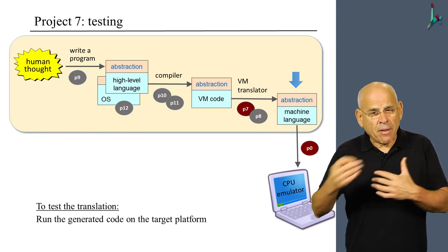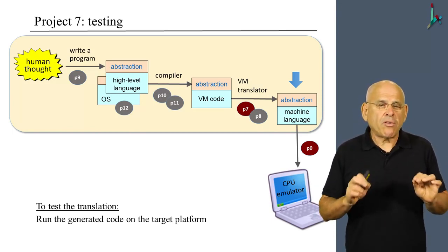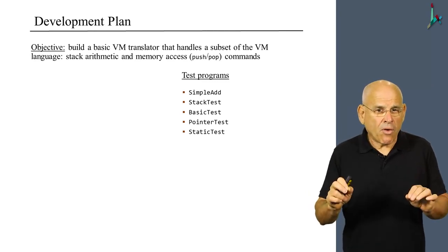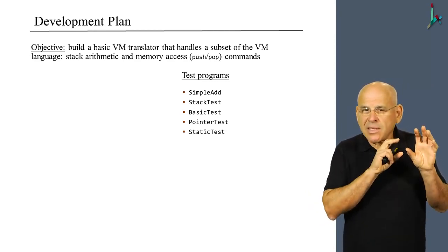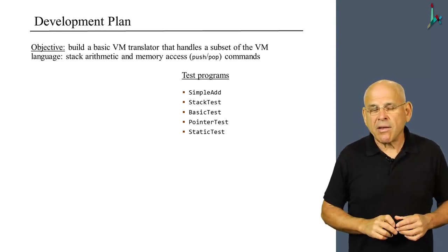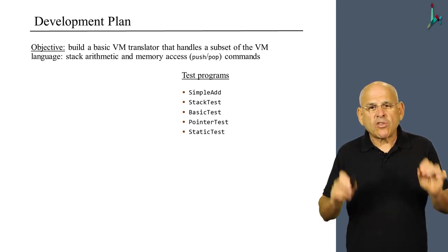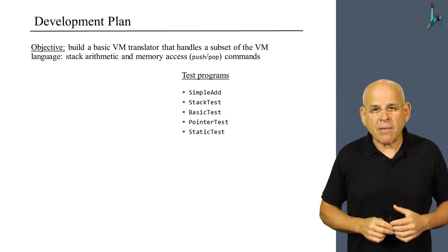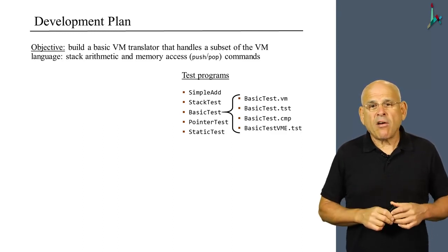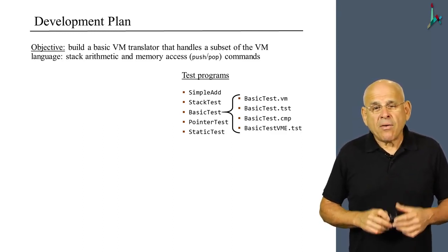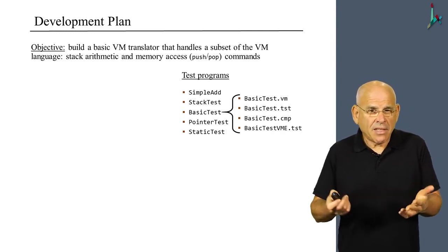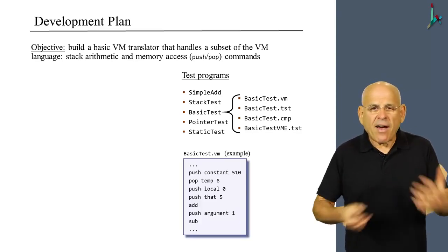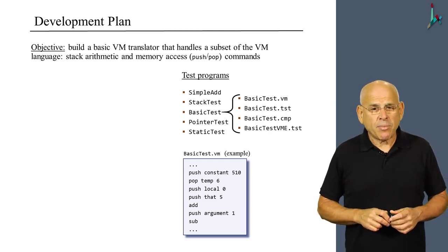I'd like to go through our development plan and explain what we have to do at every step. We supply five VM programs, and each one is designed to test some specific features of the VM translator that you are building in project seven. Every one of these programs is stored in a separate directory, so there are five directories with the same name as the program. Here's an example of one called BasicTest — the most important file in this directory is the VM program itself, which is the program we have to translate.